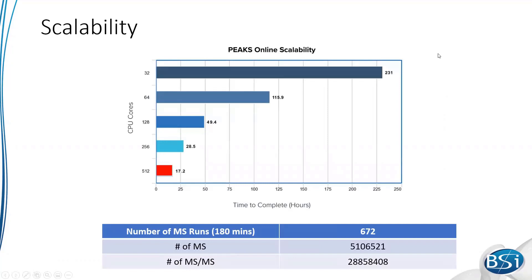The important thing about Peaks Online is that it's highly scalable and good for very large sets of data. For example, we did a benchmarking study with 672 180-minute runs — about 30 million MS/MS scans total. On a 32-thread computer, it completes that in 230 hours. But as you add more cores, at 512 cores it can complete that very large dataset in less than a day — just 17 hours. It scales linearly with the hardware you give it.